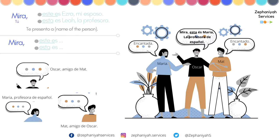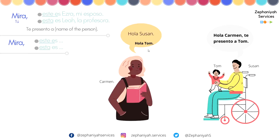Let's see another example. We have Carmen, Susan, and Tom. Carmen says 'hola' and Susan replies 'hola, Carmen, te presento a Tom.' And Carmen says 'hola, Tom.' It's very simple. If you're going out on the street and you're walking with a friend or family member and you encounter somebody that the person with you doesn't know, you can introduce them: 'esta es' or 'este es, so and so.'